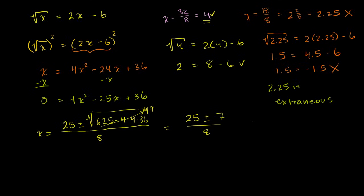Here's the conundrum: why did we get 2.25 as an answer if we did valid algebra the whole way? There's a hint when we substitute 2.25 and get 1.5 equals negative 1.5. If you look at the squared equation, both solutions actually satisfy it — both x equals 4 and x equals 2.25 work there. So something happened when we squared that made the equation slightly different.